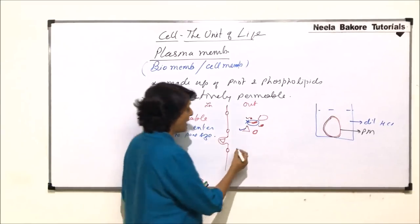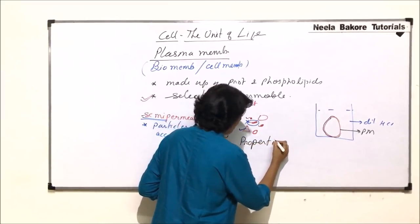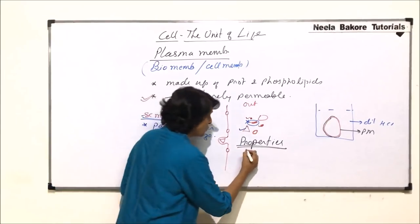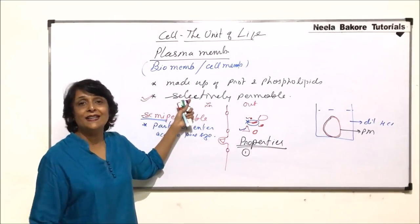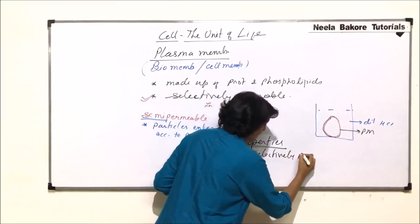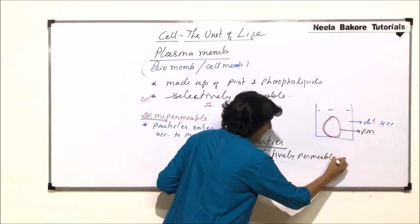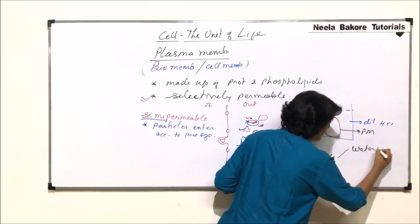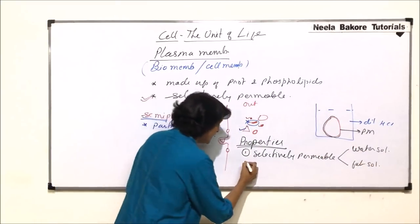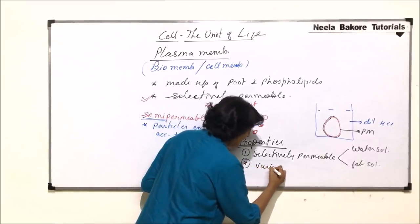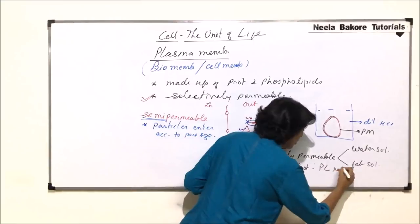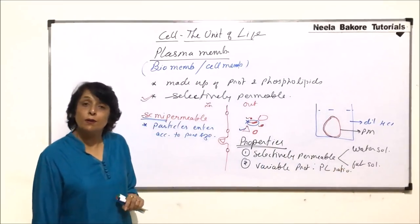The properties shown by plasma membrane will help us choose the model that could explain all these properties. First property is that it is selectively permeable — it allows the entry of water-soluble and fat-soluble substances. Second, it shows a variable protein to phospholipid ratio — the ratio of protein to phospholipids is variable in a plasma membrane.